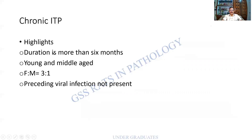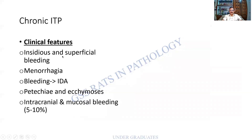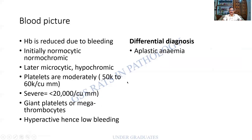Highlights of chronic ITP: duration more than 6 months; young to middle-aged adults; females more common, 3:1 ratio; no viral precedence; gradual in appearance. Bleeding manifestations include menorrhagia, mucosal bleeding, intracranial bleeding, petechiae, and ecchymosis — large blotchy regions of bleeding. The blood picture shows reduced hemoglobin due to bleeding; anemia is initially normocytic normochromic, then becomes microcytic hypochromic due to iron loss. Platelet count can be less than 20,000, and giant platelets called megathrombocytes may be seen, which are hyperactive and partially compensate.